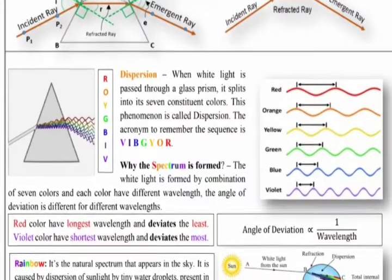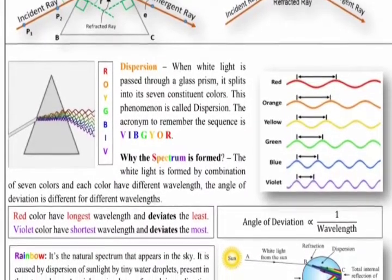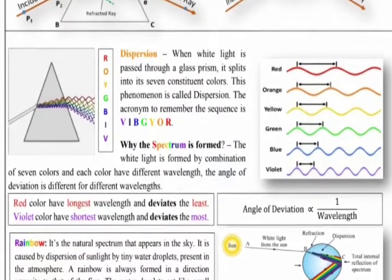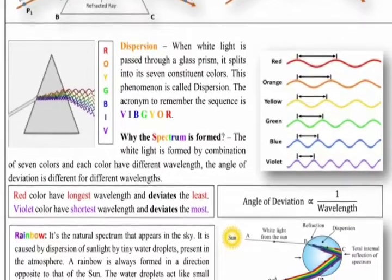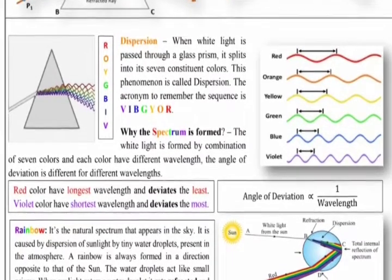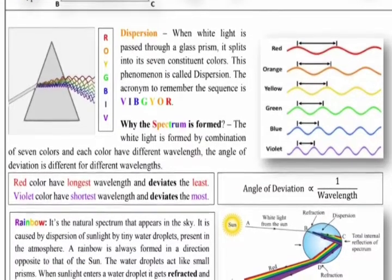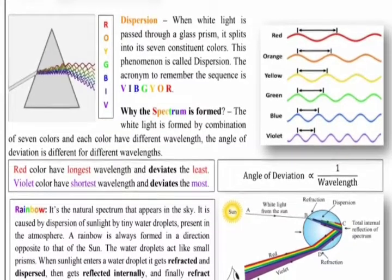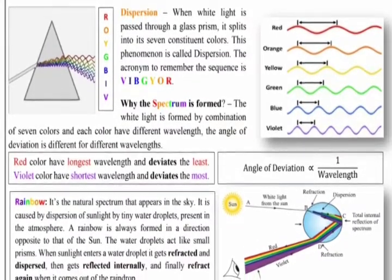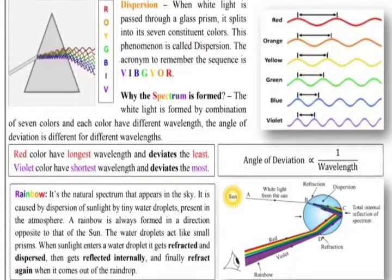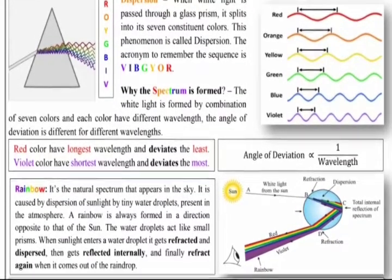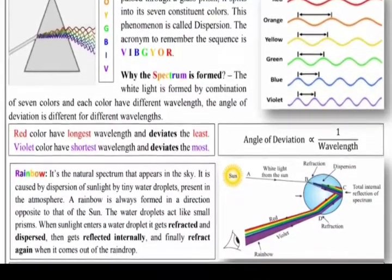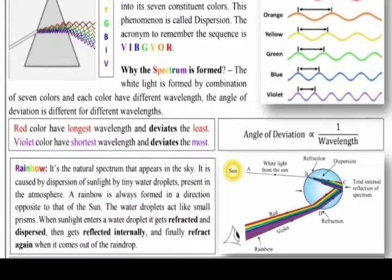This separation of white light into seven colors produces a rainbow. A rainbow is the natural spectrum that appears in the sky. It is caused by dispersion of sunlight by tiny water droplets present in the atmosphere. A rainbow is always formed in a direction opposite to that of the sun. The water droplets act like small prisms — when sunlight enters a water droplet, it gets refracted and dispersed, then gets internally reflected, and finally refracts again when it comes out of the droplet.